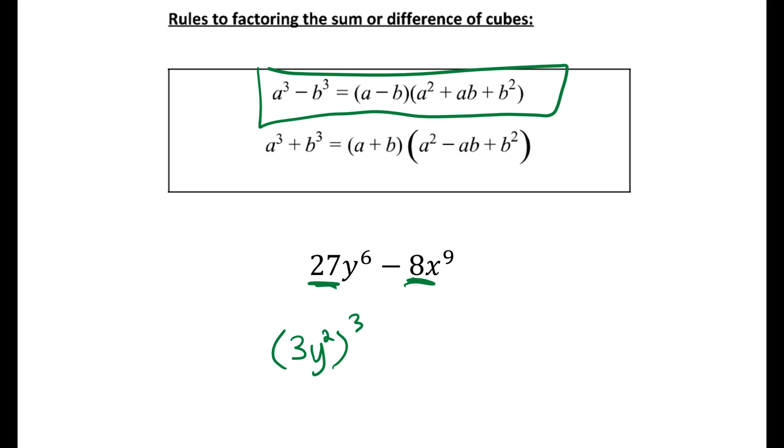Well, if I had y squared and I cubed it, I would multiply those exponents to figure out how many y's I have altogether, so that's how I get y⁶. Realistically, as a shortcut, you could just take both of these exponents and divide them by 3 to figure out what's in the parentheses. So for 8x⁹, I know 2 cubed is 8, and I would have x cubed, because I multiply these exponents to get x to the 9th.